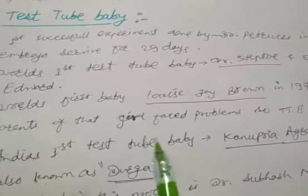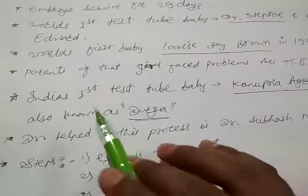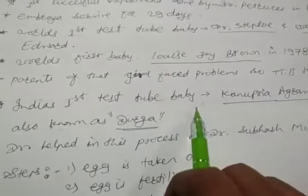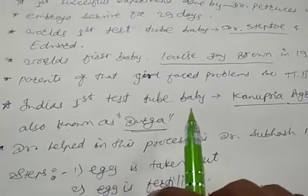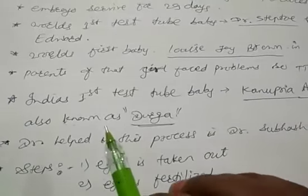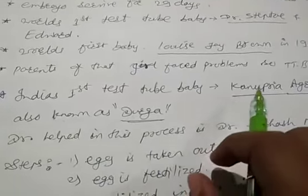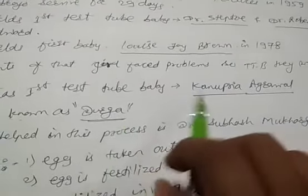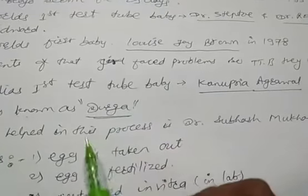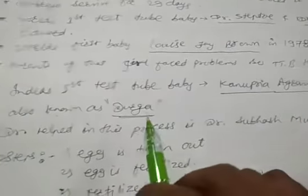Louise Joy Brown was born in 1978. Now we will see about India's first test tube baby. India's first test tube baby's name was Kanupriya Agrawal. She is also known as Durga. So her real name is Kanupriya Agrawal, but in exams either name — Durga or Kanupriya Agrawal — may appear, and both are acceptable.